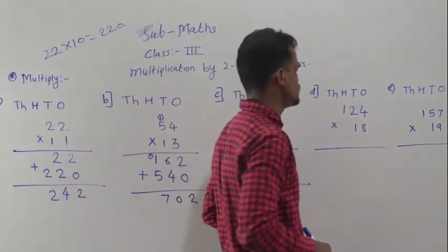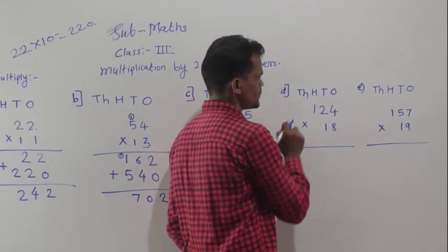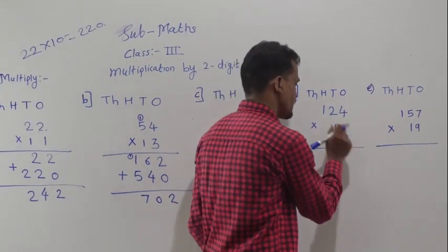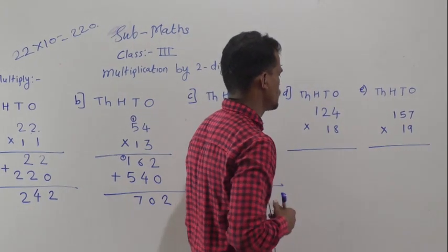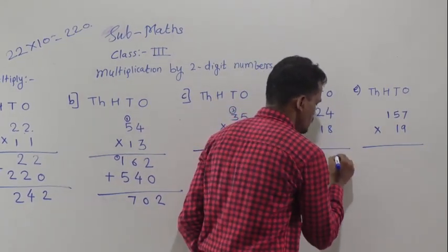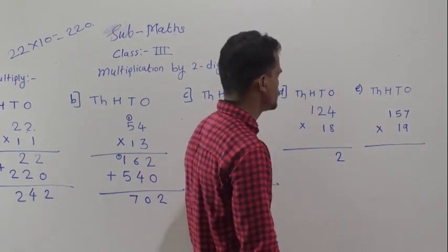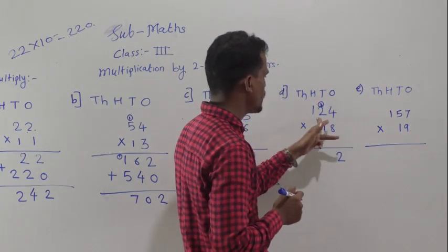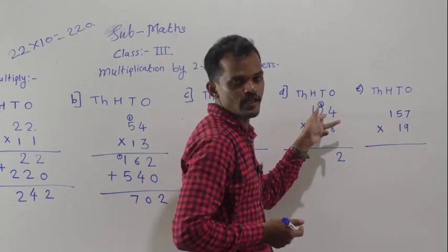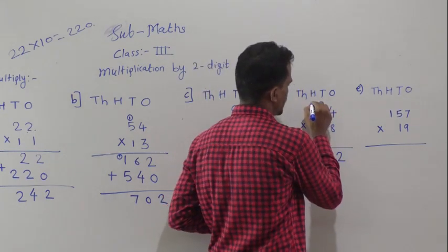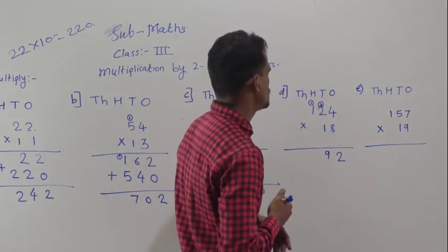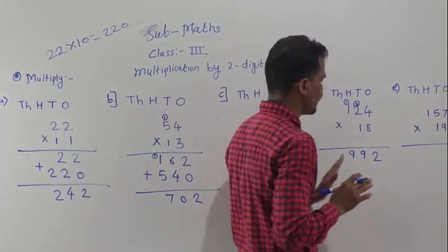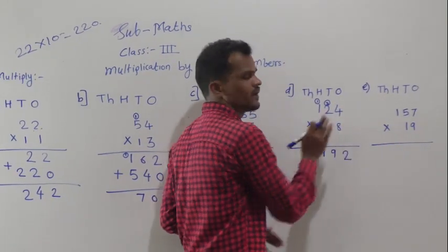Next example: now here a 3-digit number is there. Multiply 124 by 18. First multiply by 8. 8 fours are 32 — write 2 here and carry 3 forward. 8 twos are 16, plus 3 carry means 19 — write 9 here and carry 1 forward. 8 ones are 8, plus 1 carry is 9. So we have multiplied 124 by 8.